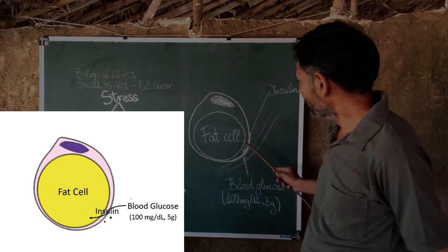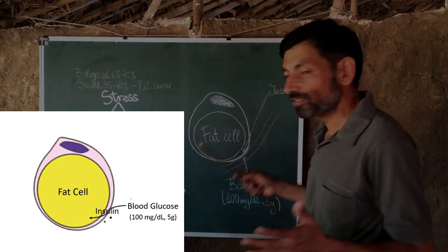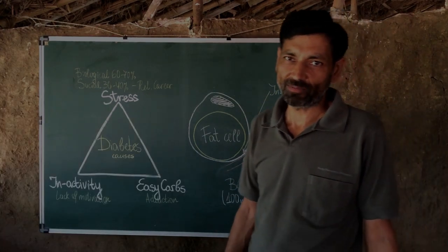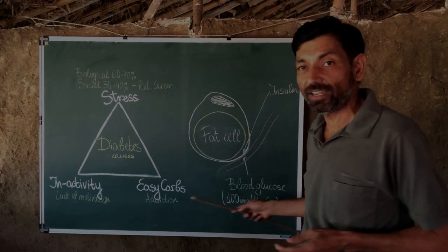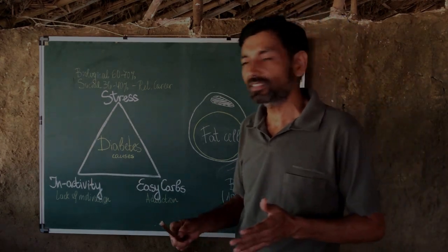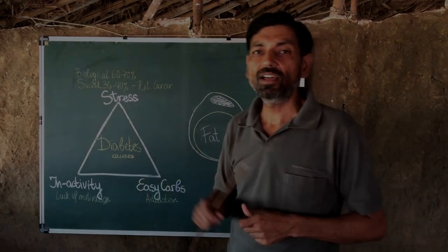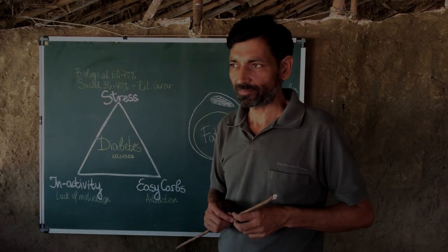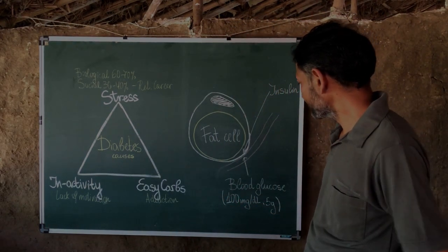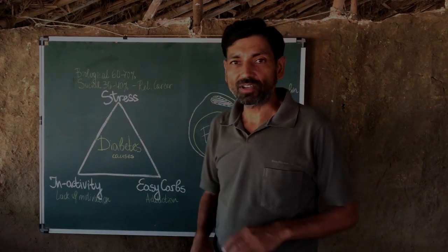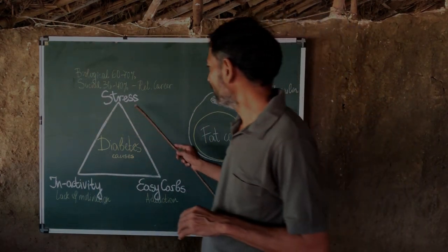If you could keep the fat cells from being full and your insulin is working properly, you will not have diabetes. Most medicines work by pushing this gate and making glucose enter the fat cell — sometimes insulin itself is used, sometimes other medicines. Now, coming to the causes of diabetes: diabetes is mainly caused by three factors — stress, inactivity, and easy carbs.